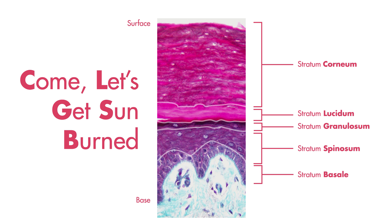So going over this, the first letter in each word in this mnemonic stands for a layer of the epidermis, from surface to base. This would be C for stratum corneum, L for stratum lucidum, G for stratum granulosum, S for stratum spinosum, and finally B for stratum basale.